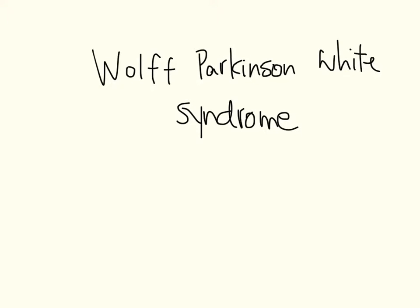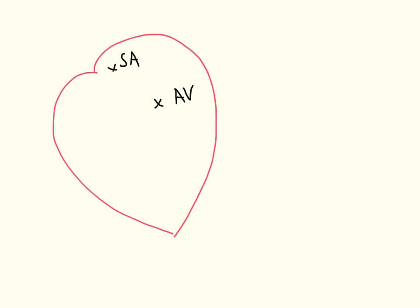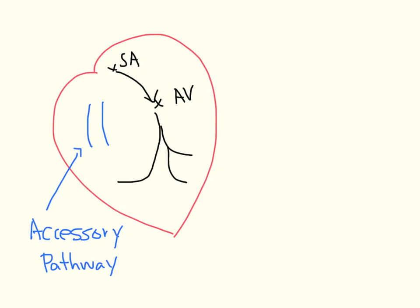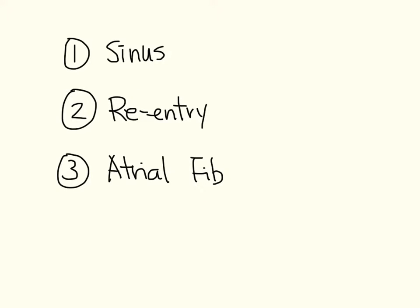This video will talk about Wolff-Parkinson-White syndrome. In the normal heart, impulses go from the SA node, through the AV node, down to the ventricles. In Wolff-Parkinson-White syndrome, there is an accessory pathway. Most of these pathways will allow impulses to either go up or down through it. There are three main scenarios to consider: sinus rhythm, re-entry tachycardia, and atrial fibrillation.